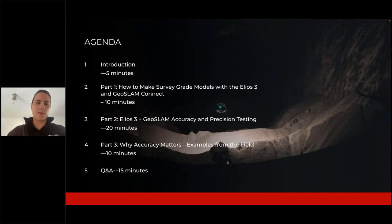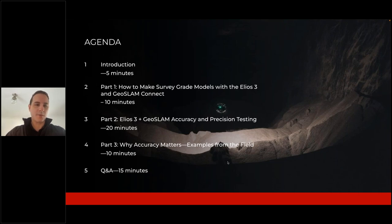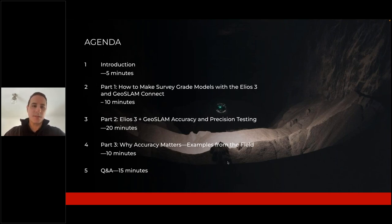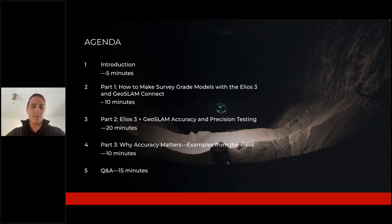Here's a quick overview of what you can expect today. First, we'll do an introduction — that's what we're doing right now. Then we'll dive into the first topic: how to make survey-grade models with the Elios 3 and GeoSlam Connect, with Charles presenting primarily. After that, we'll look at the testing we did with GeoSlam Connect — that's part two: Elios 3 and GeoSlam accuracy and precision testing. We did two tests, and the results are covered in white papers we published last week. The last section covers why accuracy matters, with examples of how 3D models are being used in the field. And finally, we'll end with a Q&A.